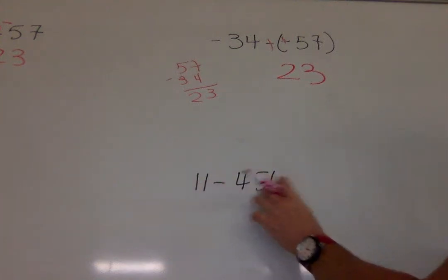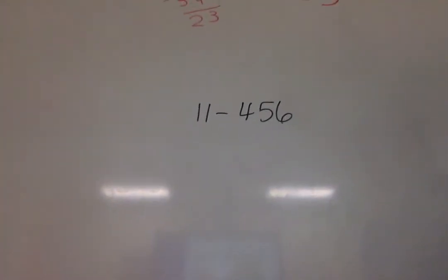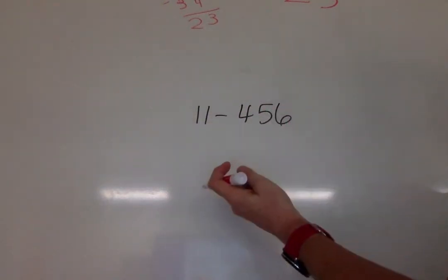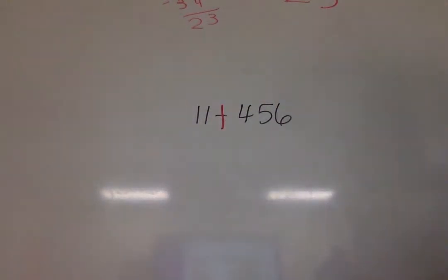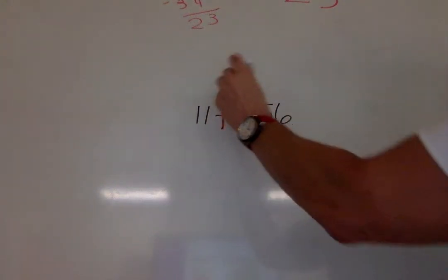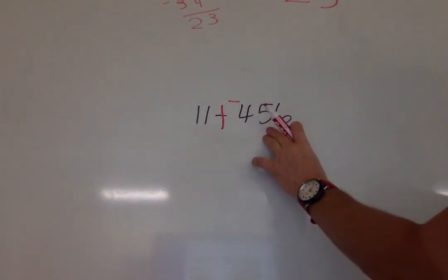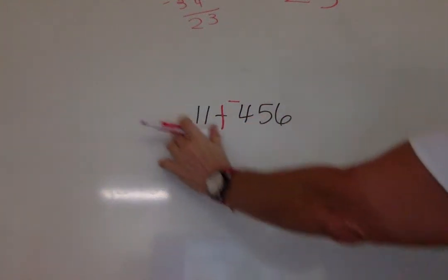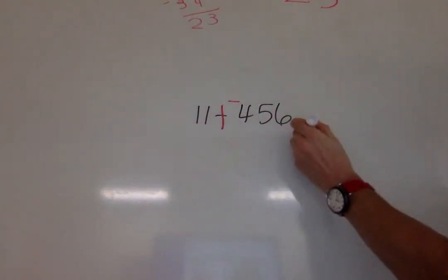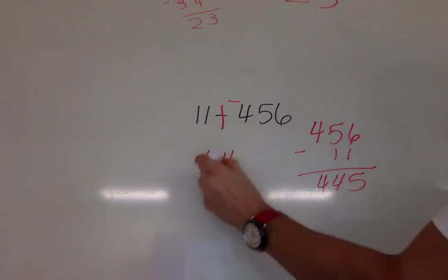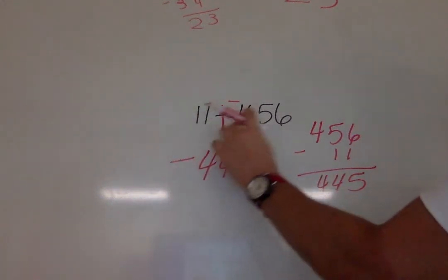11 minus 456. Don't be scared of the big numbers. It is okay. Y'all are learning how to do this. So we have 11 minus 456. The first step is to change subtraction to plus. And then don't forget to make this the opposite. We're adding the opposite. Well, different signs. This number is definitely bigger. So now we have 456 minus 11. Our answer is 445, and it's negative.